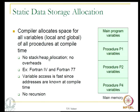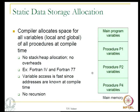The characteristics of static allocation are: there is no stack or heap allocation, so there is no overhead in accessing variables and no need to create an activation record. The overheads are very low. Languages which use static data allocation are Fortran IV and Fortran 77, which are very old programming languages. Because the addresses are all known at compile time, accessing the variables is very fast.